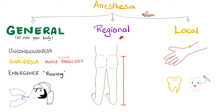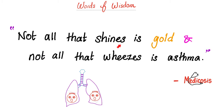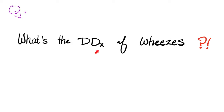Anesthesia is general, regional, or local. This is the most important chart in the entire video — please memorize every single word of it. Not all that shines is gold, and not all that wheezes is asthma. What is the differential diagnosis of wheezes? Let me know the answer in the comment section — you will find the correct answers in the next video.